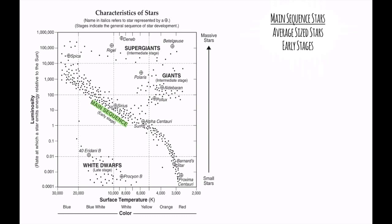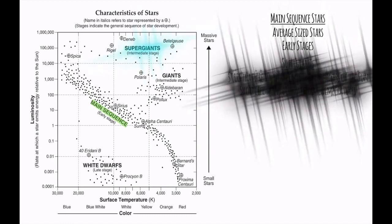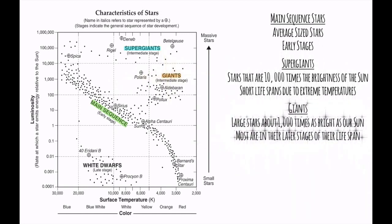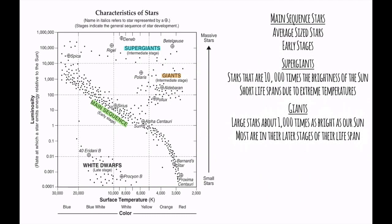Other groups of stars on the table: we have our supergiants, which is an intermediate stage, but very few stars get to be supergiants. These are stars that are enormous in size, 10,000 times the brightness of the Sun, and they all tend to have very short lifespans because they burn so hot. There are also giants, which is another intermediate stage, about a thousand times as bright as our Sun. Stars you find in the giant phase tend to be a little bit older than stars in the supergiant phase.